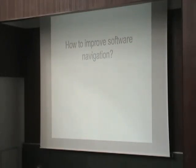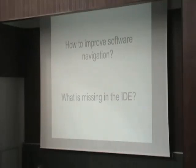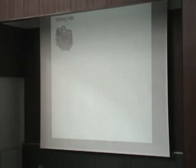My question is: how can I actually improve navigation? What is actually missing in the IDE? What do we need to change from the IDE point of view to make navigation of source code better? We came up with five different ideas, five different concepts on how to actually improve navigation. The first basic idea is to represent workflow context in the IDE.